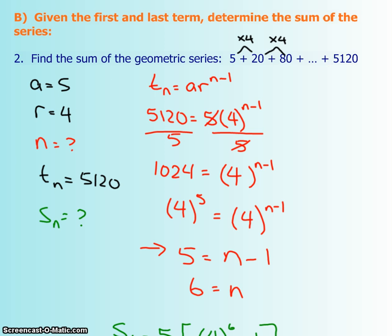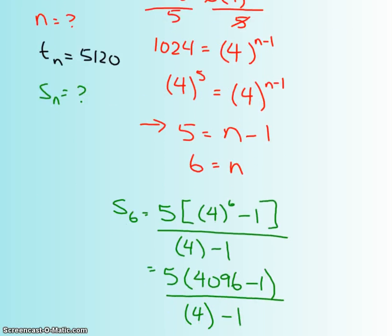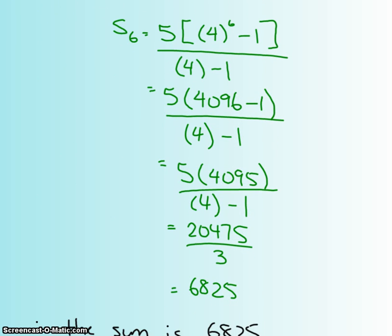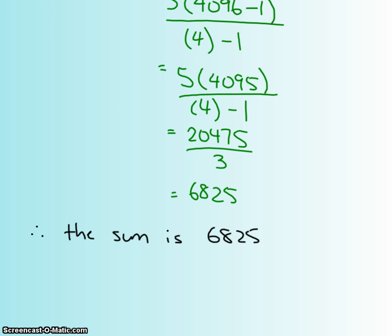Now that I know that there are six terms in the series, I can then plug everything into the sn formula. So I'm going to scroll down a bit. And you're going to have the same a value, the same r value, and you're doing the exact same BEDMAS steps, and you get the sum as 6825. Then remember, at the end, because these are word problems, you want to just put a very simple therefore statement.